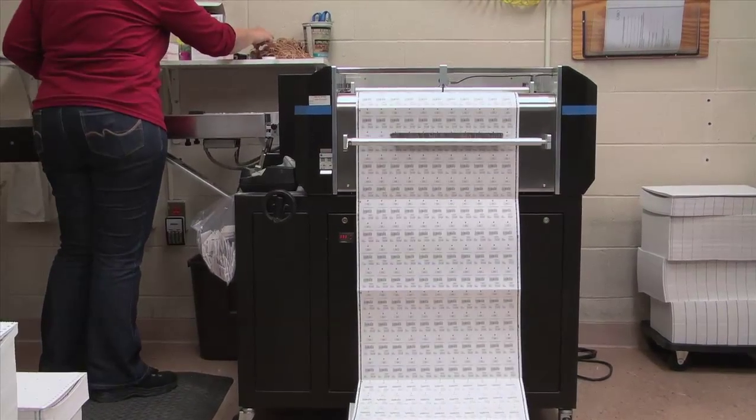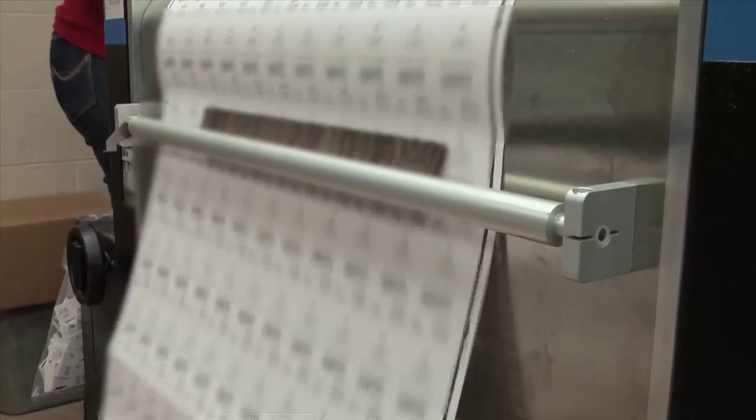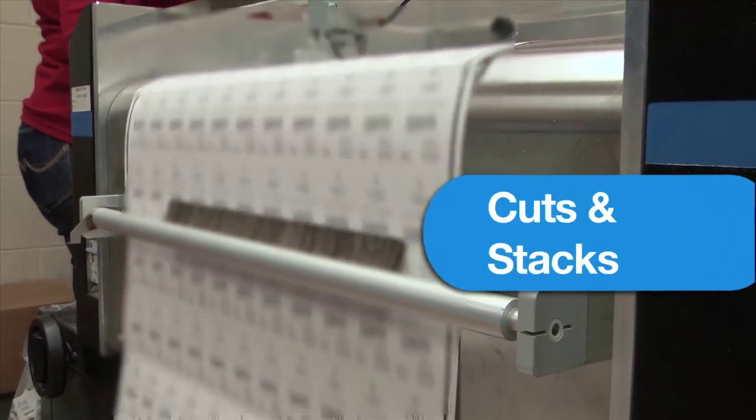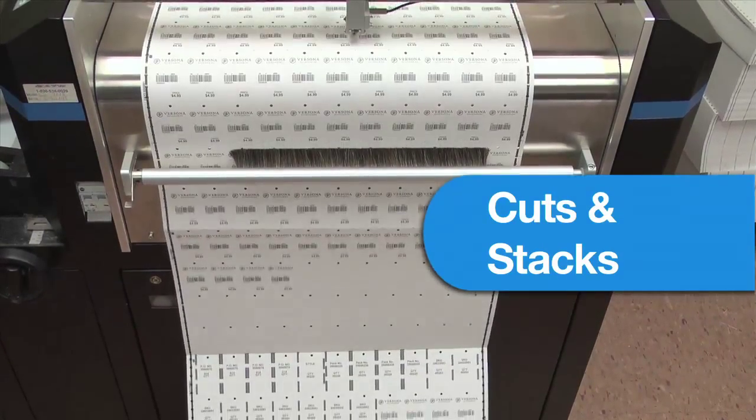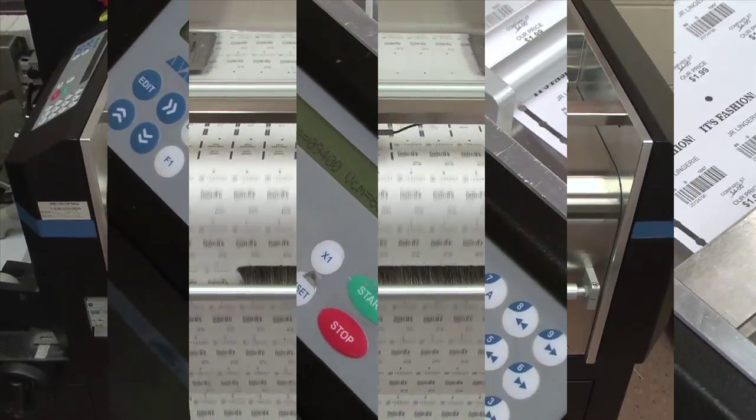The CS9018 can create tags as small as 1 by 2 inch and as large as 3 1/2 by 4 1/2 inch. The CS9018 cuts and stacks individual tickets on an extended stacker arm, which can hold approximately 3,500 tickets.